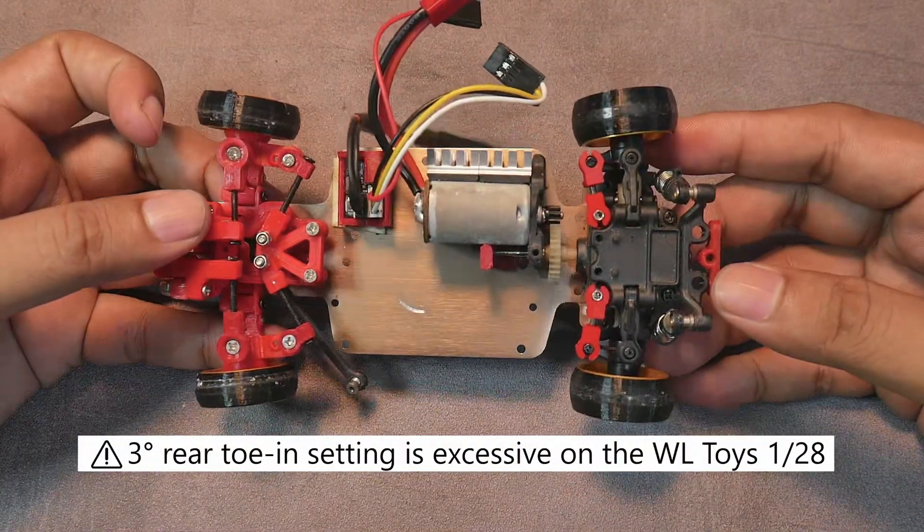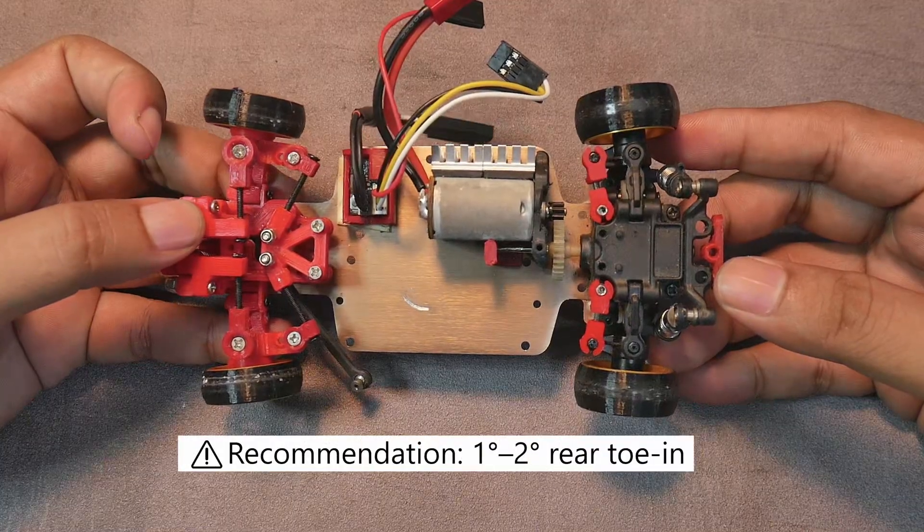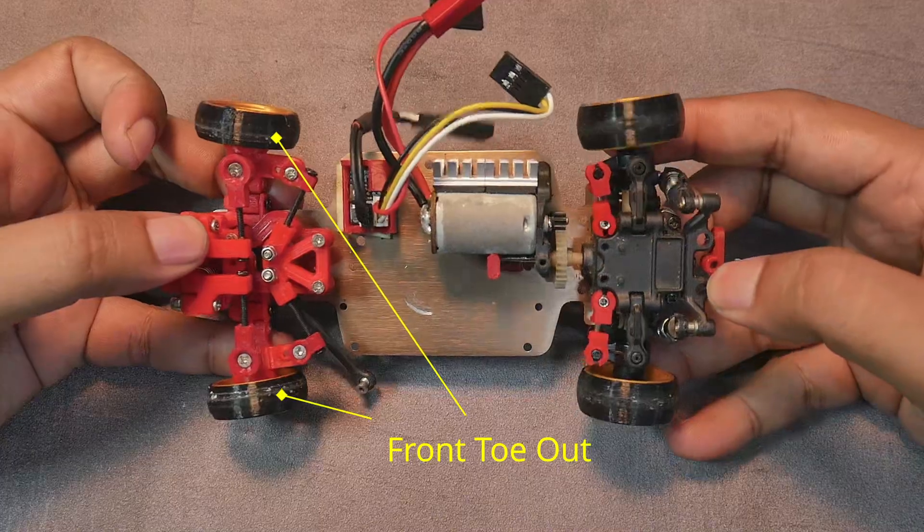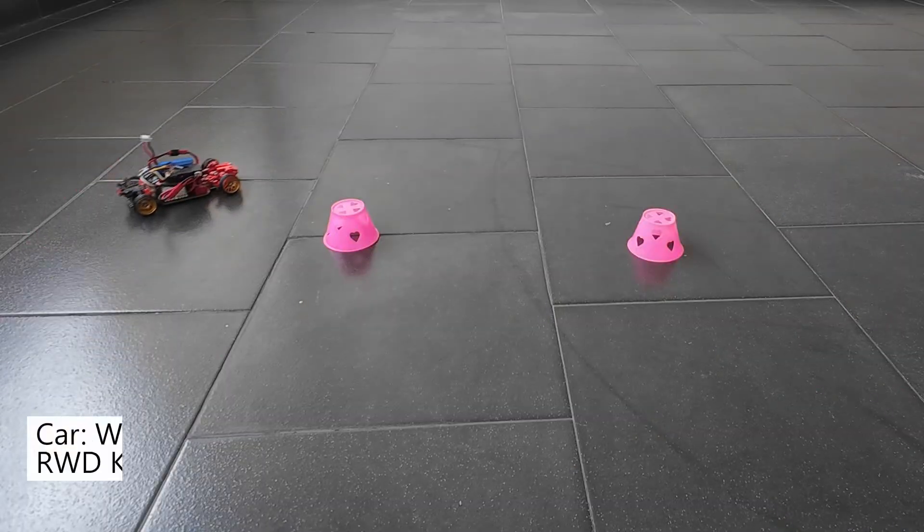Drawbacks of rear toe-in that I personally feel: The bigger the toe-in angle, the slower and less responsive the car becomes. Second, when the toe-in is set too high, the car feels understeer and struggles to maintain drift angle, especially on long slides with high entry angle.